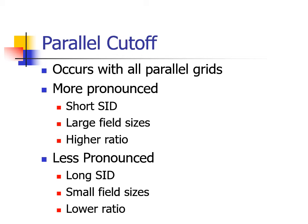Probably parallel grids are more useful for non-Buckey exposures or portable work. Parallel grids should not exceed an 8 to 1 ratio.